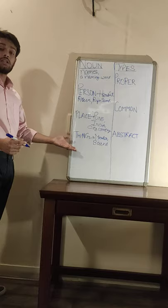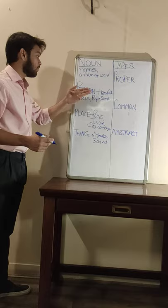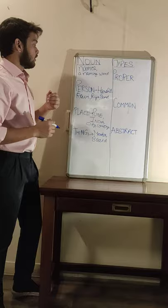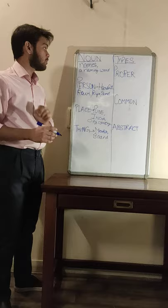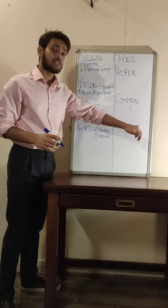So, a noun is a naming word and it can name a person, a place, or a thing. Now, what are the different types of nouns? There are many different types of nouns, but today we are going to learn about the main three types: proper, common, and abstract.